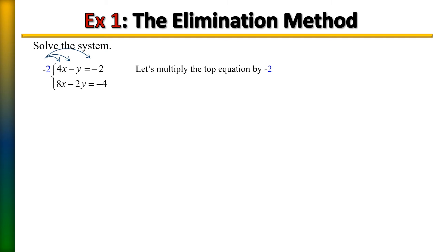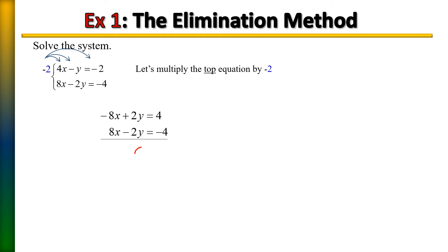So let's go ahead and multiply the top equation by negative 2 and distribute that to each term. Once we rewrite our first equation we can go ahead and add the equations. We're not going to do anything to the second equation. Now take a look at our equations — notice our x's cancel out, they're opposites of each other, they're gone. So are the y's, and on the right side of the equations our constants cancel out as well.